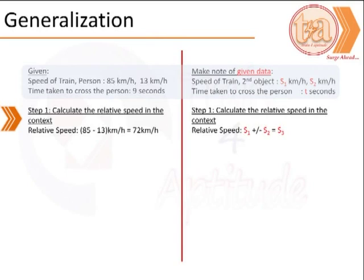The next step to generalization is that of calculating the relative speed. Depending on whether the person is moving in the same direction or in the opposite direction, we will need to take a choice on the signs of relative speed.